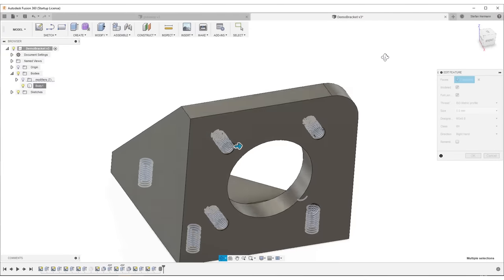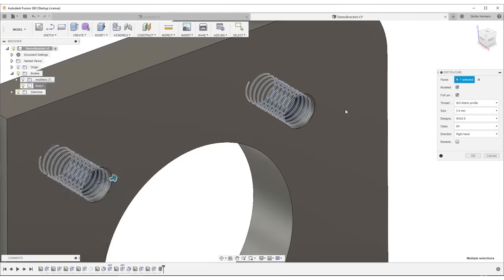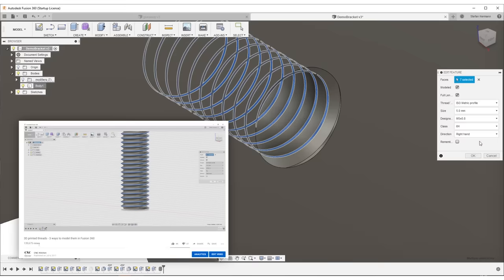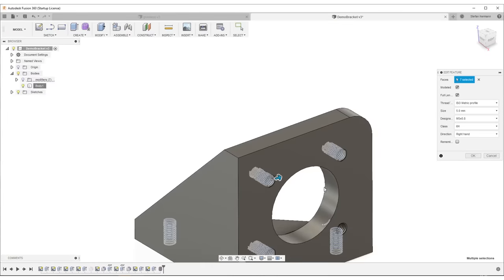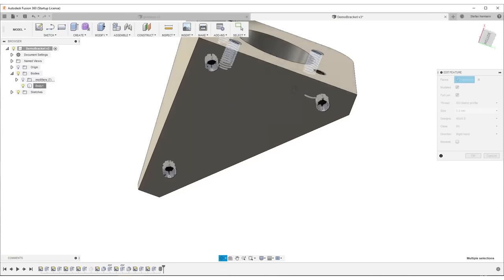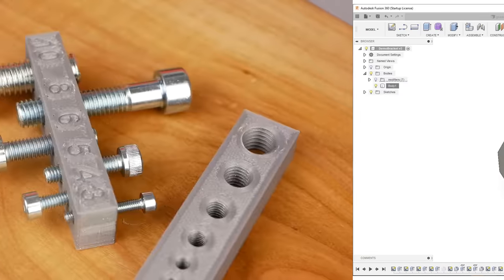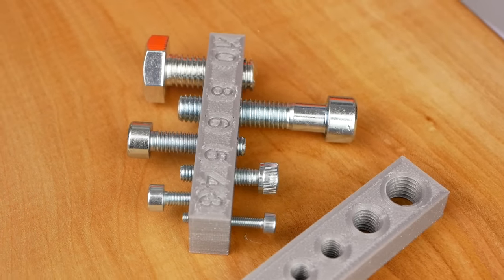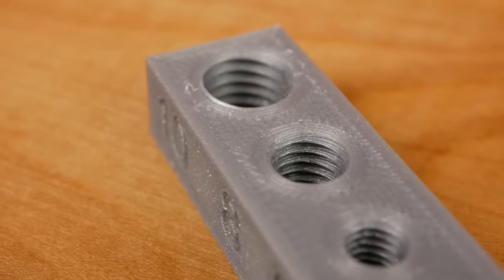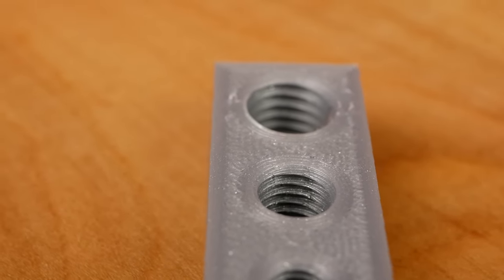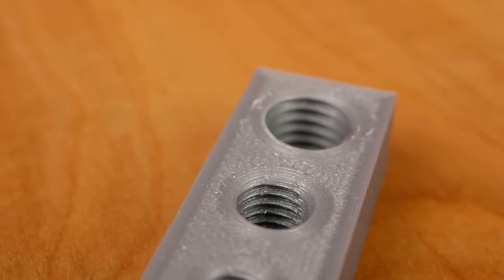Third, I'll physically model the threads in Fusion 360 as I have already shown in depth in a previous video. I didn't use any offsets and was quite surprised that threads even as small as M3 worked out perfectly without any rework necessary in both horizontal and vertical printing orientation. If you want to try this out with your own printer and material I linked my test parts down in the description.